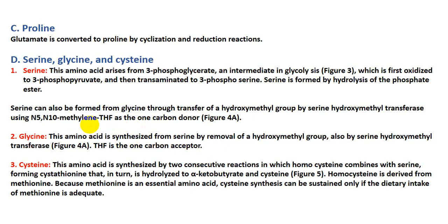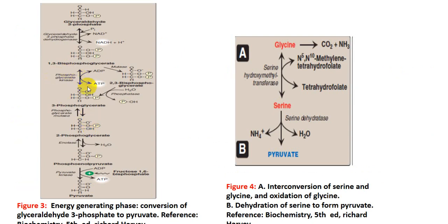Another type of non-essential amino acids includes serine, glycine, and cysteine. Serine can be synthesized from 3-phosphoglycerate, which is oxidized to 3-phosphopyruvate, then transaminated to 3-phosphoserine, and finally hydrolyzed to form serine. Serine can also be synthesized from glycine by addition of a hydroxymethyl group, requiring tetrahydrofolate, which acts as a one-carbon donor, to transfer a hydroxymethyl group to glycine to form serine.